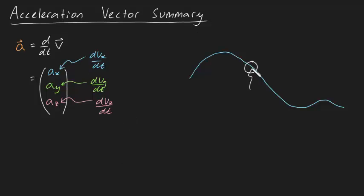How would you draw the acceleration vector, though? Unlike the velocity vector, the acceleration vector doesn't have to point tangentially to the path.